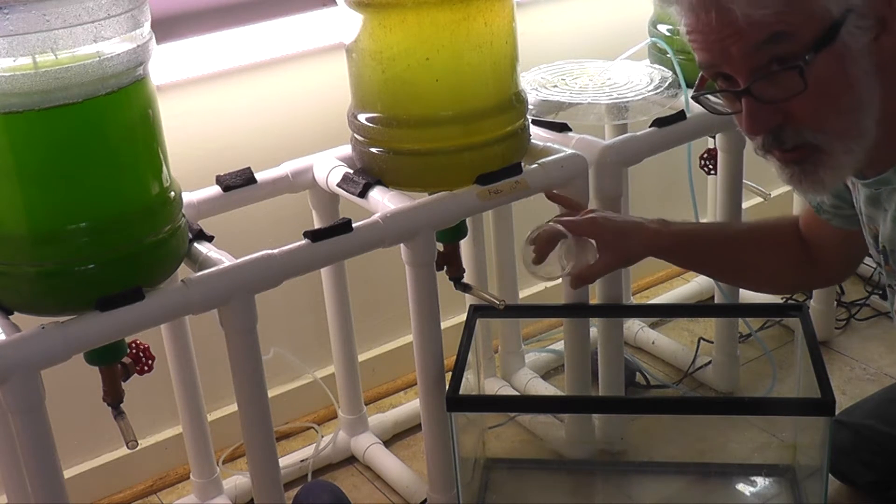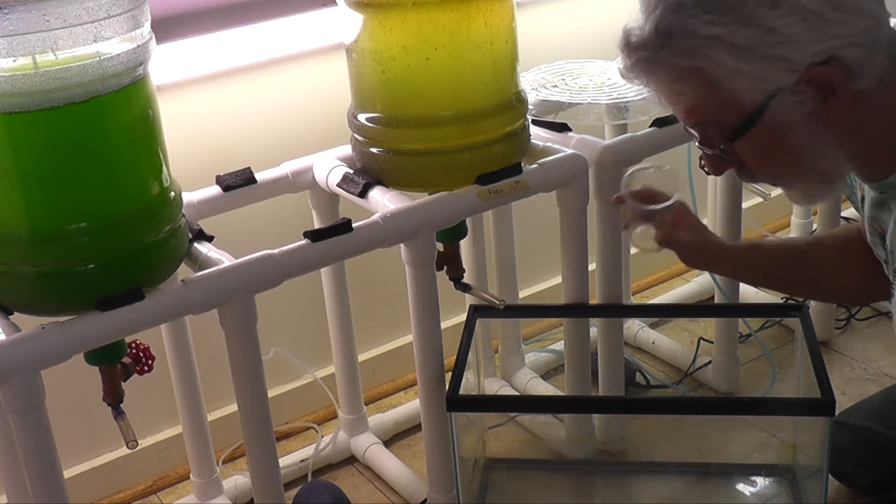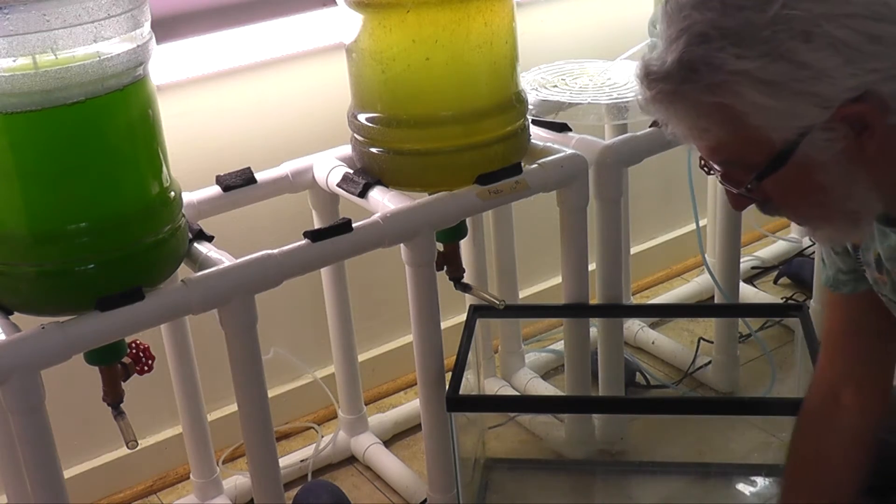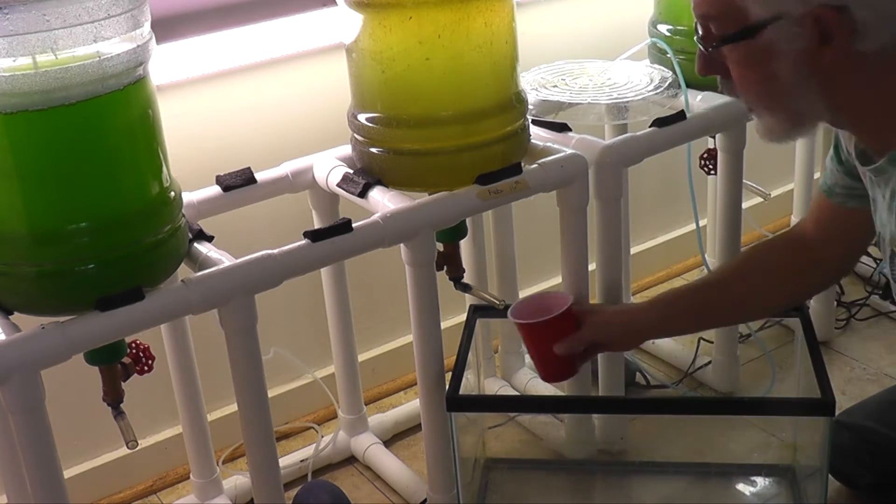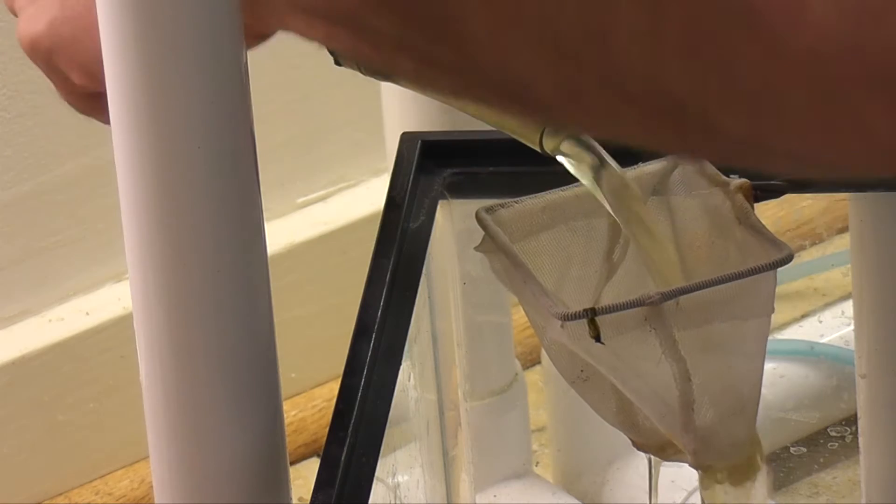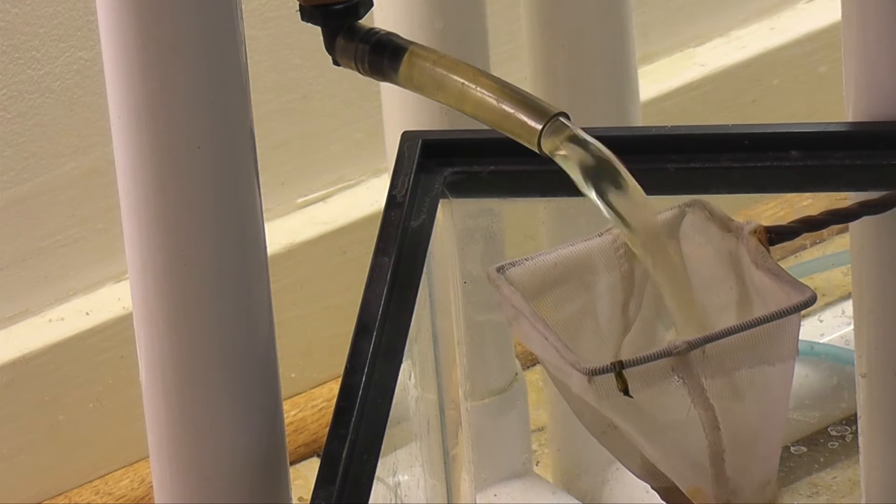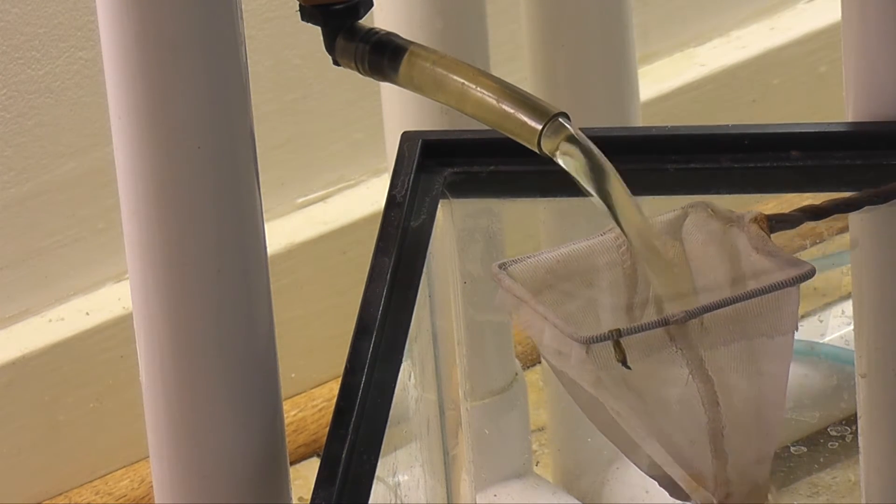So first we want to get the dirt out of the bottom. Now we're going to strain the 6 or 7 day old baby shrimp out of the water.